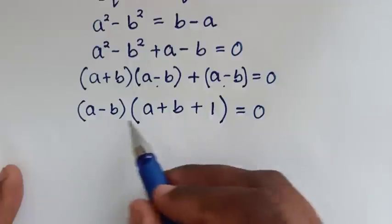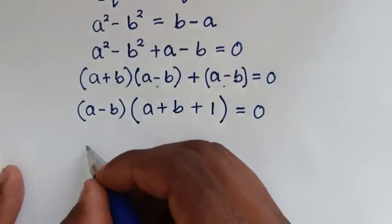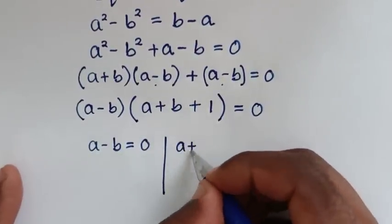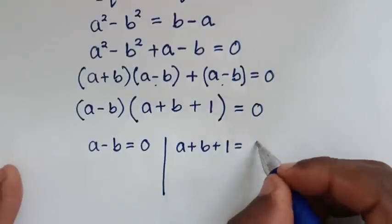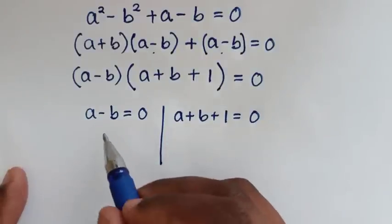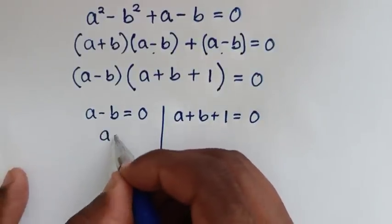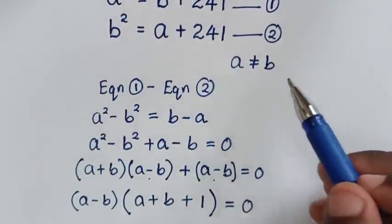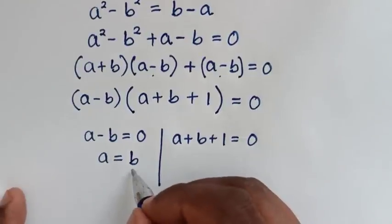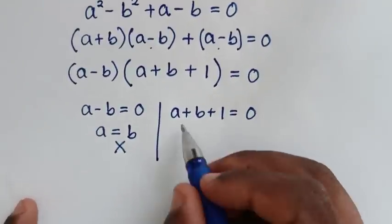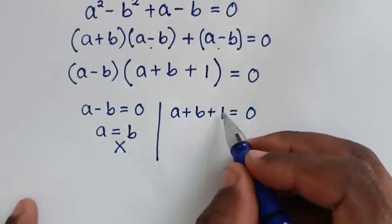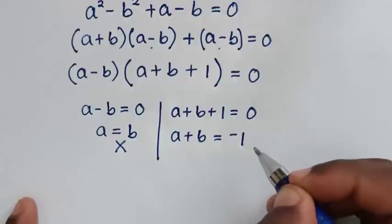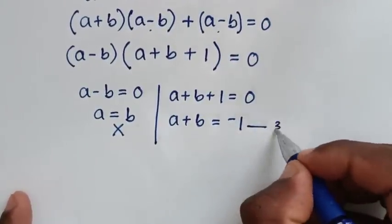From this factored form we have two solutions. The first solution is a minus b equals 0, which gives a equals b. However, the condition from our problem states that a is not equal to b, so this solution is not possible and we reject it. From the second solution, a plus b plus 1 equals 0, taking 1 to the right side gives a plus b equals negative 1. We'll call this equation 3.